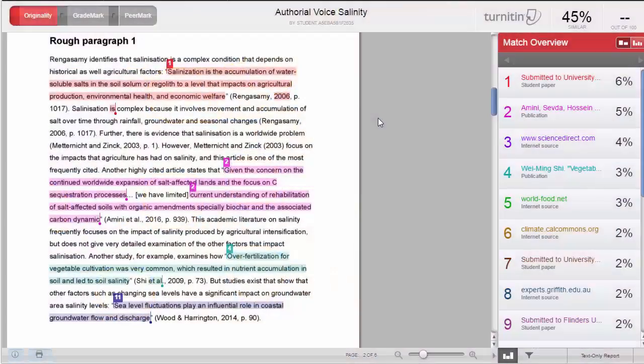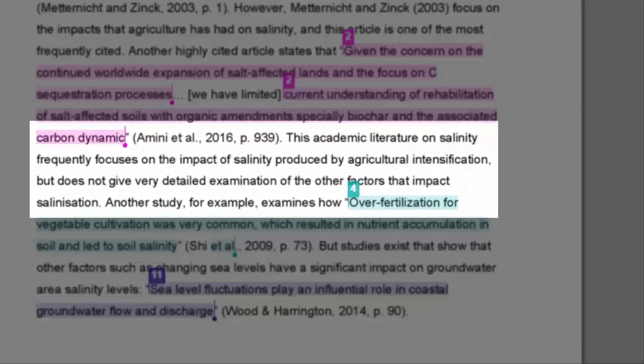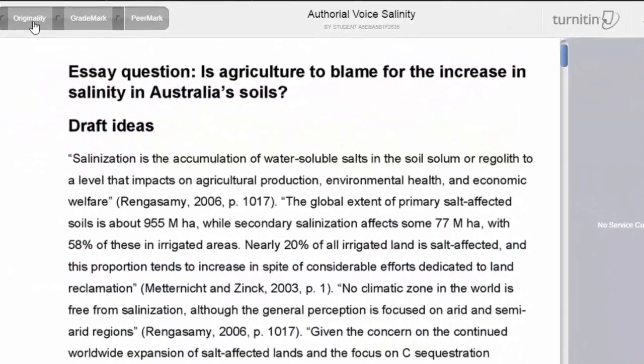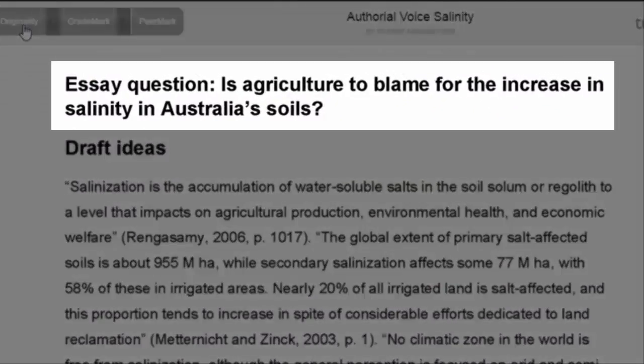If you look around the middle or end of your paragraph, you might find a sentence there that explains your argument more clearly, and you could possibly rewrite it to use it as your topic sentence. For instance, you'll notice in this example that in the middle of the paragraph, the student has made their own voice a bit clearer when they say, this academic literature on salinity frequently focuses on the impact of salinity produced by agricultural intensification, but does not give very detailed examination of the other factors that impact salinization. This idea is starting to answer the question, since the student is implying that agriculture is not the only reason for the increase in salinity in Australia's soil.